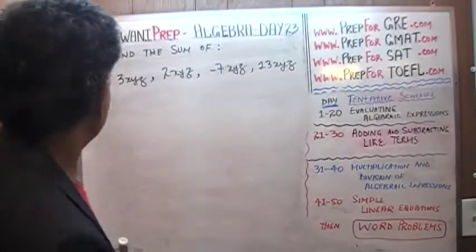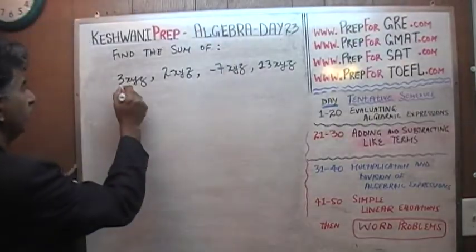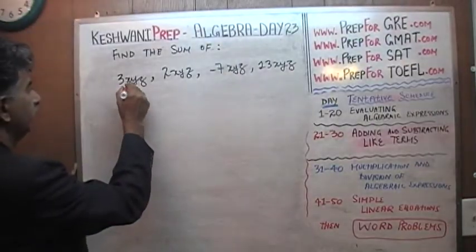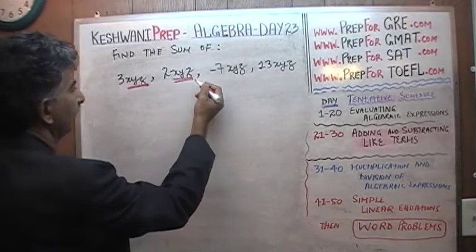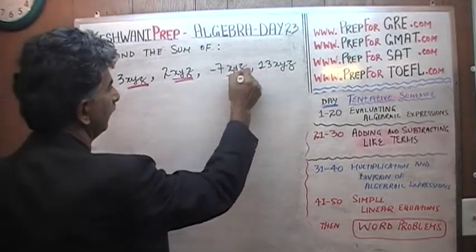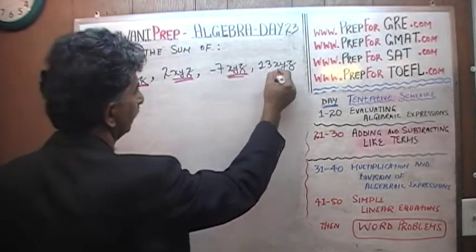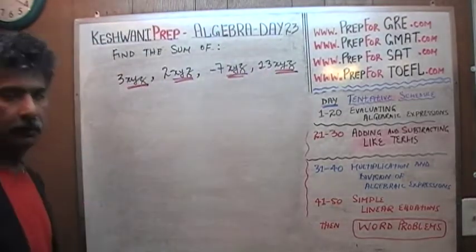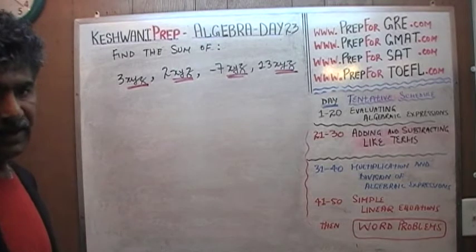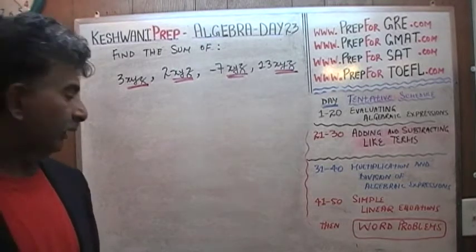Well, what do you notice? We notice that here we have xyz, and here we have xyz, and here we have xyz, and here we have xyz — they are all like terms, they are all similar terms.